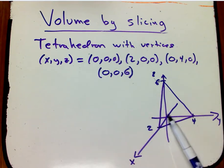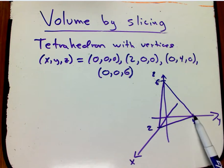And then 2, 0, 0, and then 0, 4, 0, and 0, 0, 6. So four vertices make this four-sided object tetrahedron.